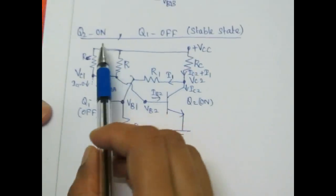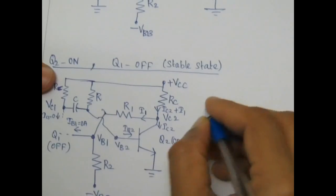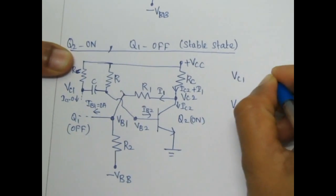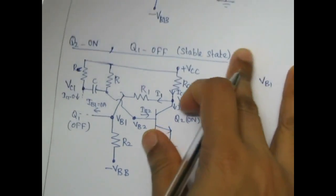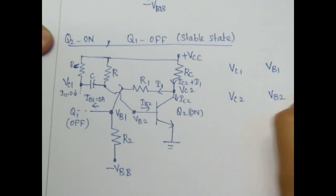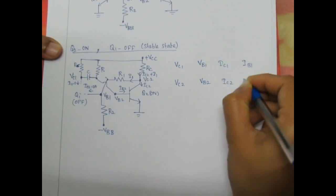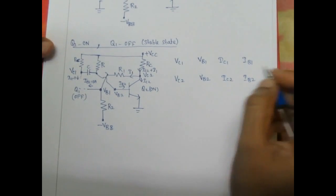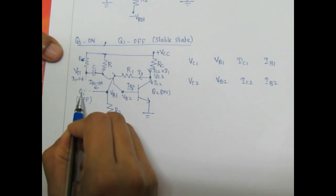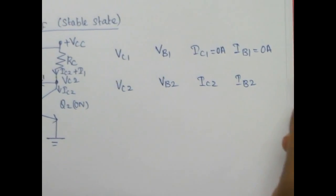In stable state, Q2 transistor is on and Q1 transistor is off. We have to find VC1, VC2, VB1, VB2, IC1, IC2, IB1, and IB2. As per the circuit diagram, if Q1 transistor is off, its collector current and base current is equal to 0 ampere.